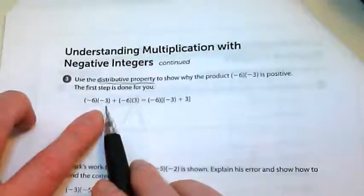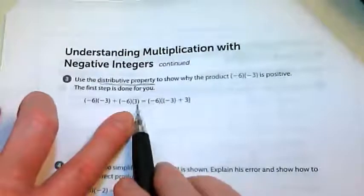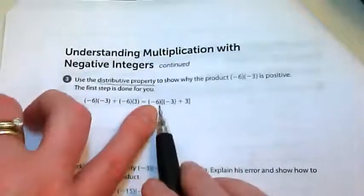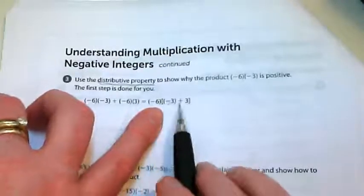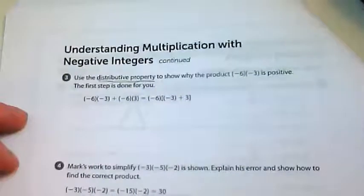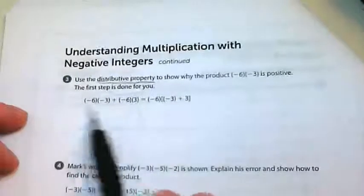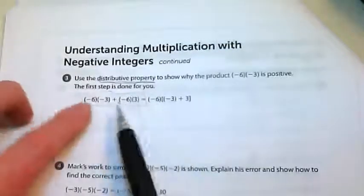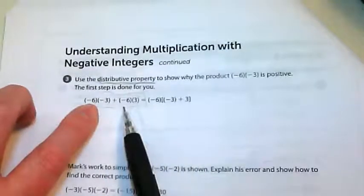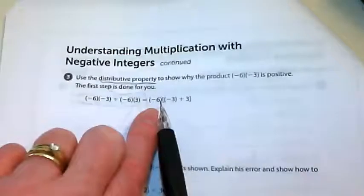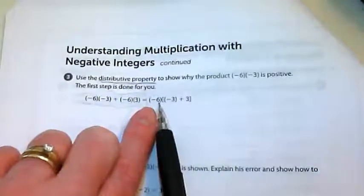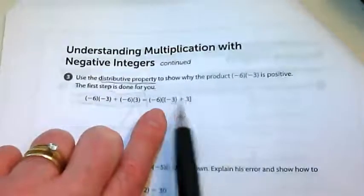So negative 6 times negative 3 plus negative 6 times 3 is equal to negative 6 times negative 3 plus 3. So they've taken this first step and they've said if both of these are multiplied by negative 6, then I can undistribute them and show that negative 6 is times negative 3 plus 3.